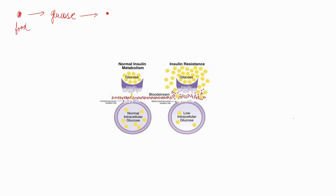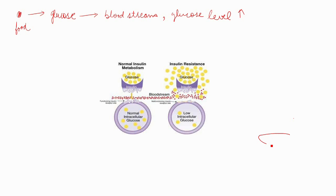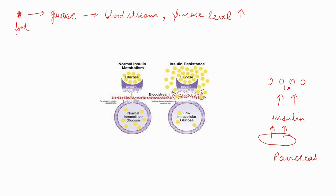Glucose is transferred to the bloodstream, causing blood glucose levels to rise. As the blood glucose level rises, the pancreas releases the hormone insulin, which further increases the uptake of glucose by the cells.